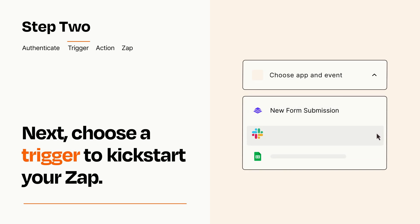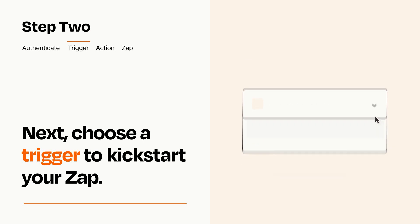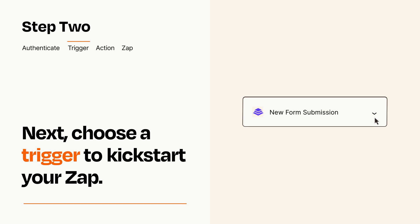Pick the trigger event that you want from the list. When you set up this step, your Zap will pull in test data from your trigger app that you'll see later when setting up your action app.